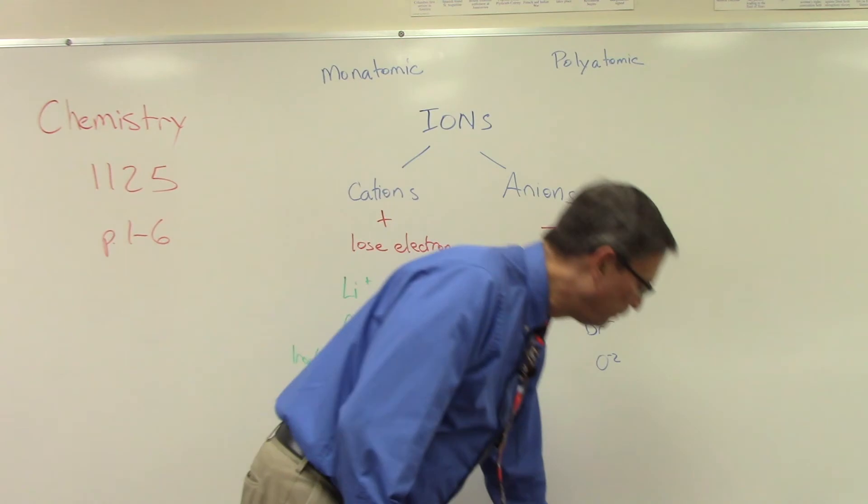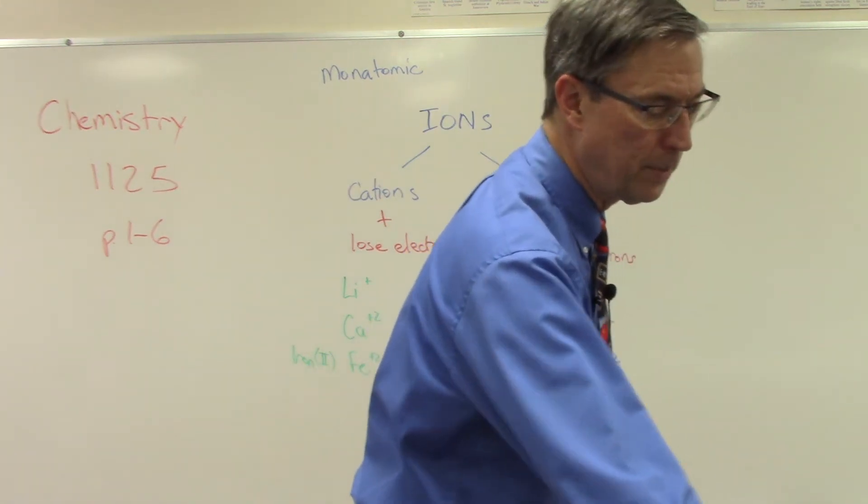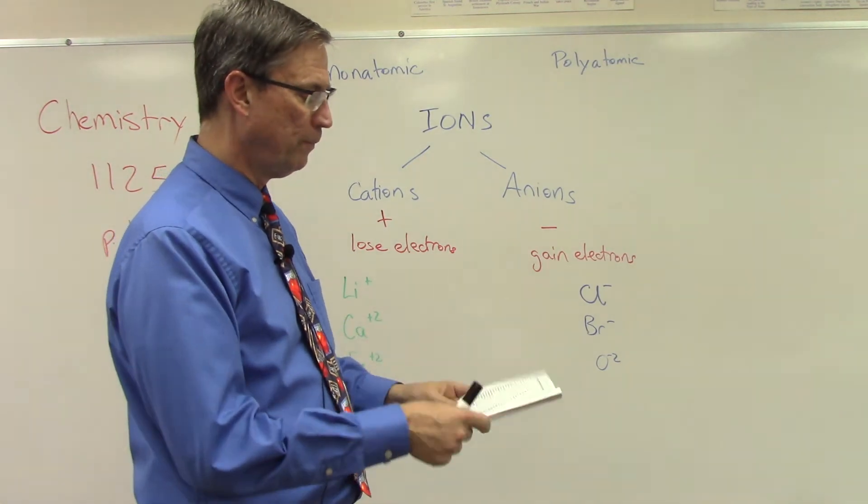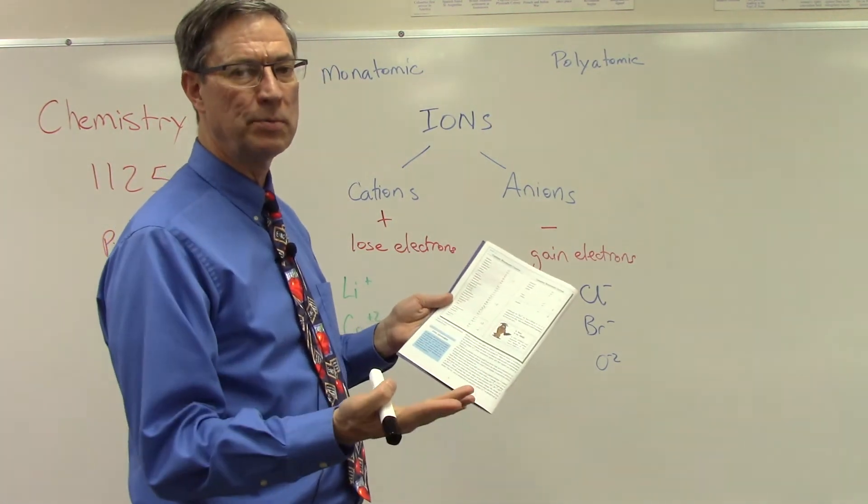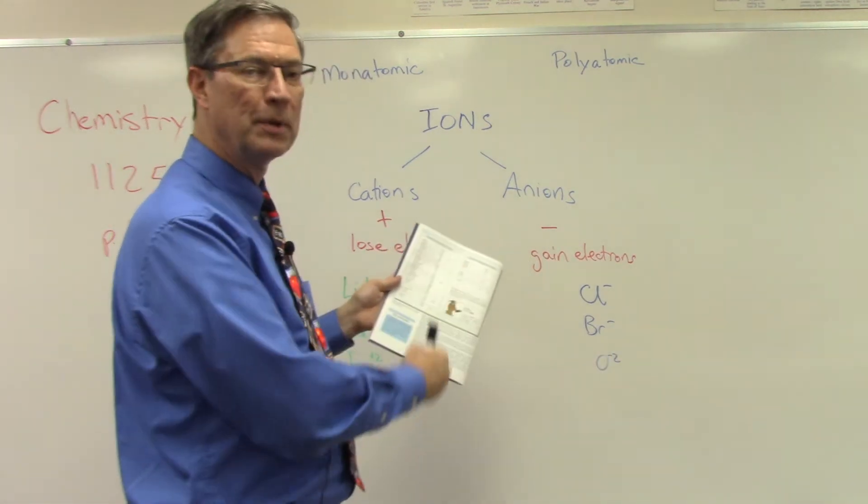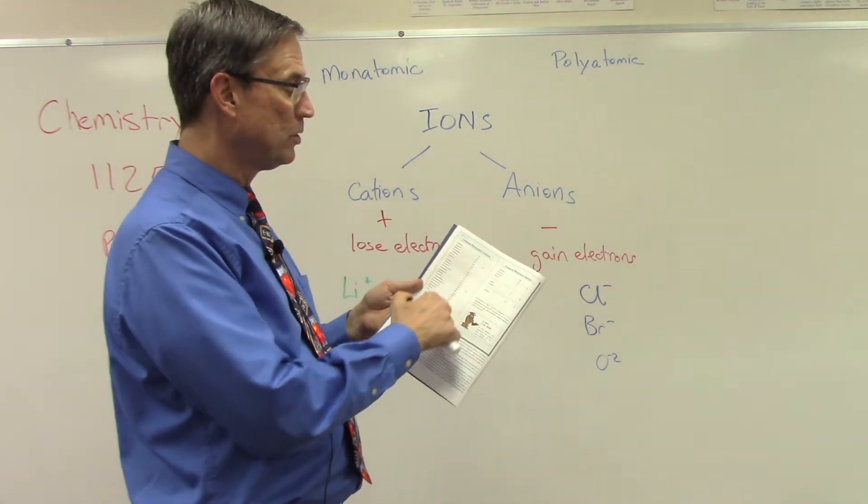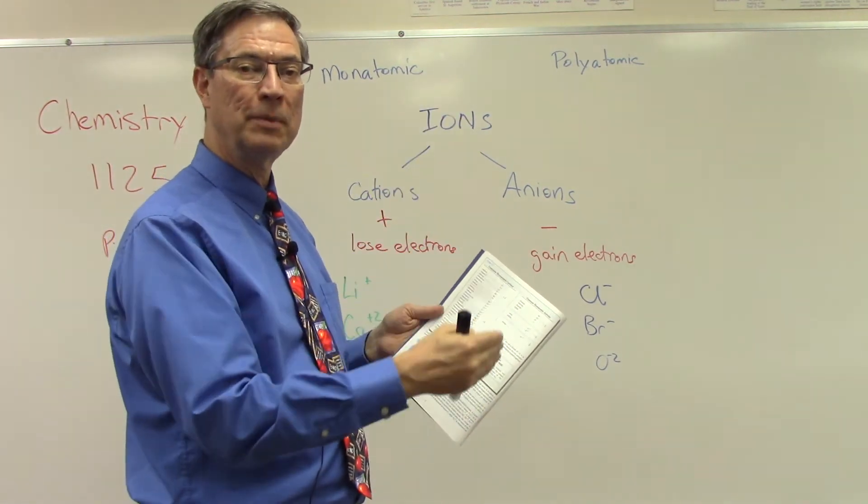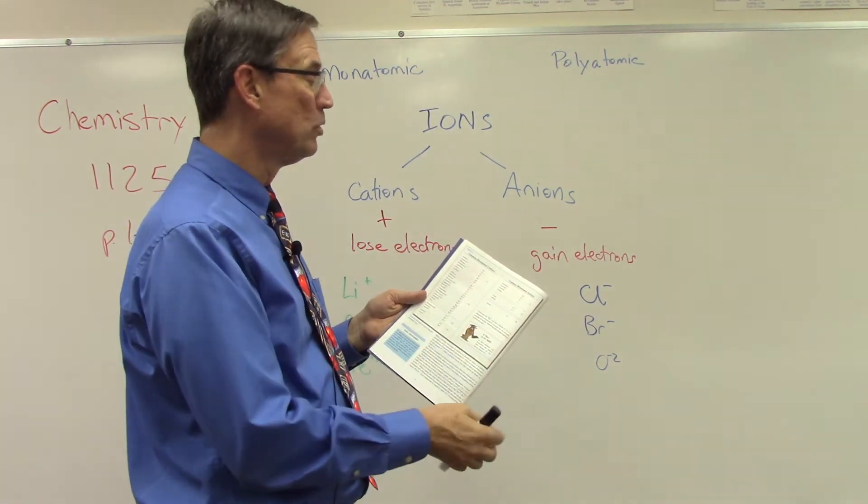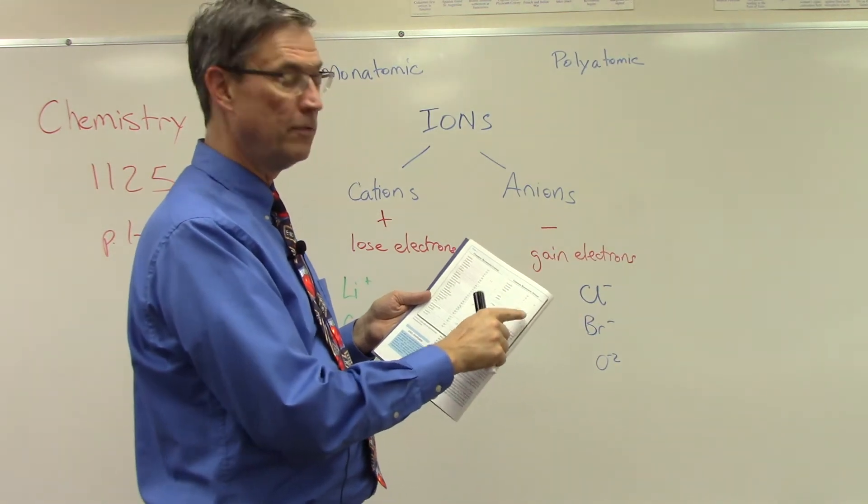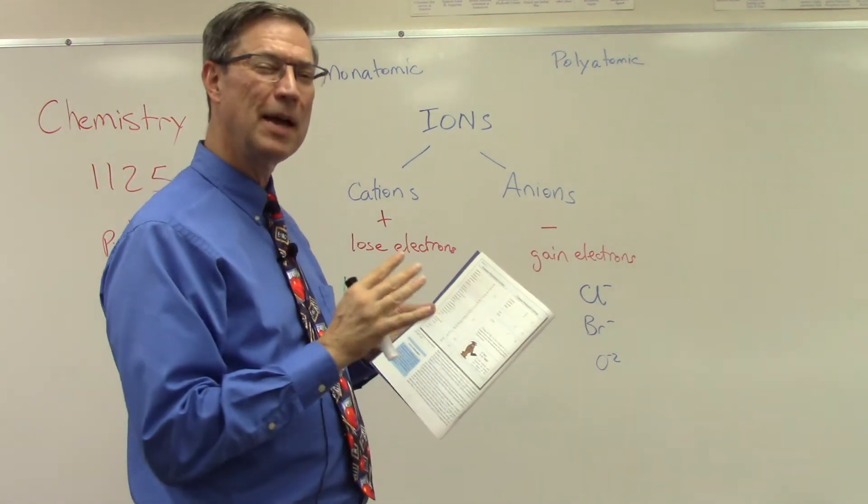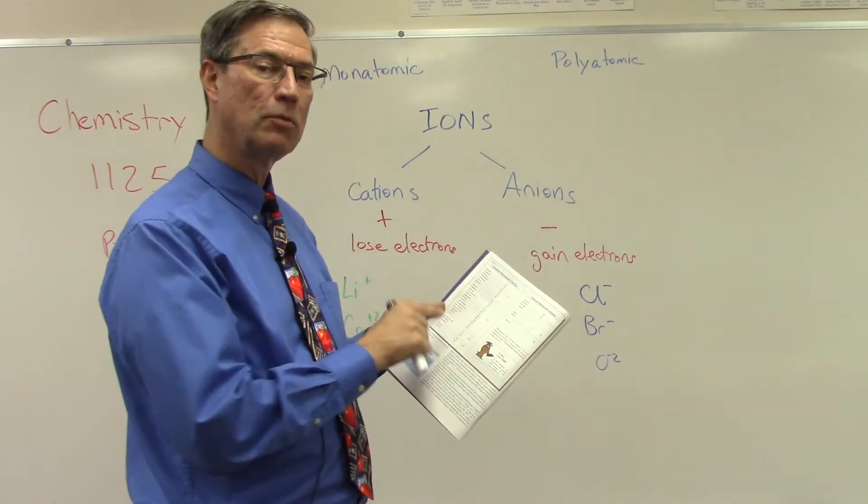Now if you look at your table on page six, excuse me, go back to page two. This looks like a confusing table, actually it's pretty simple. Everything that is a one is basically coming from family one on the periodic table. Everything that's a two are the things coming in family two on the periodic table, okay? The negative ones, those are all family seven. Negative twos, those are coming from family six on the periodic table. So when you kind of see that it makes a little more sense.